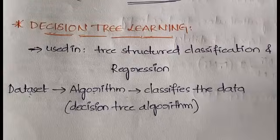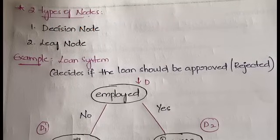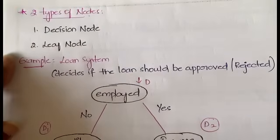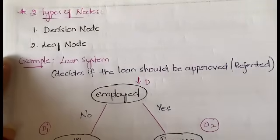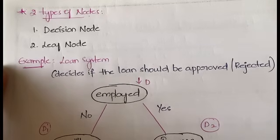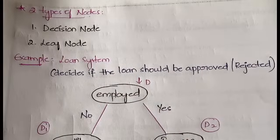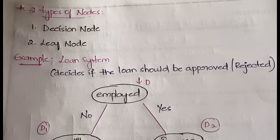In the decision tree we have two types of nodes: the decision node and the leaf node. The decision node is the root node — the point from where branching begins and all decisions are taken. The leaf node is the terminal node; you cannot branch further from a leaf node. Those are the last nodes in the tree.